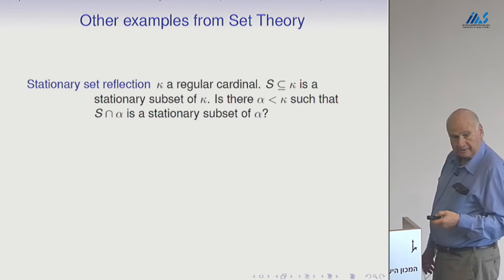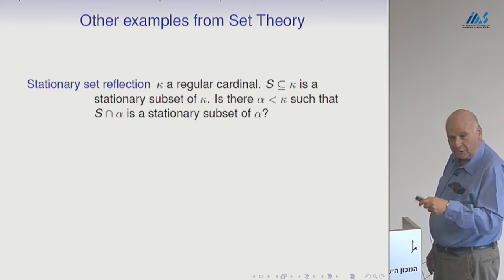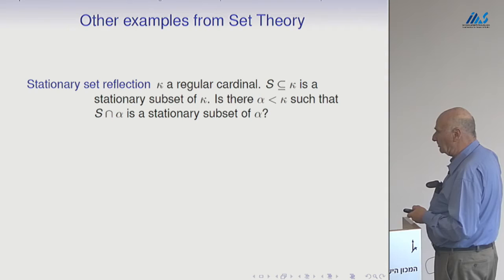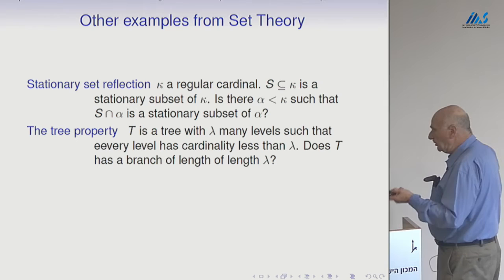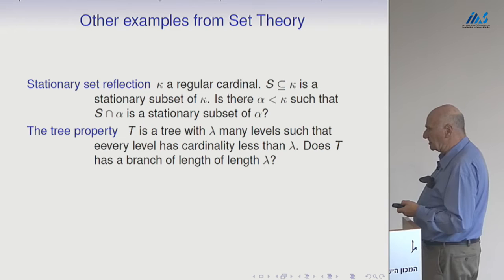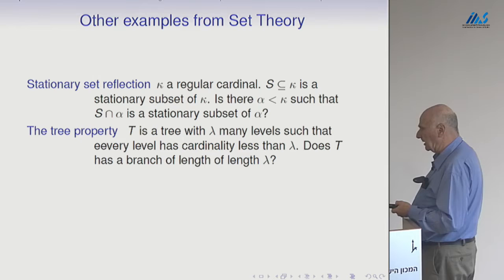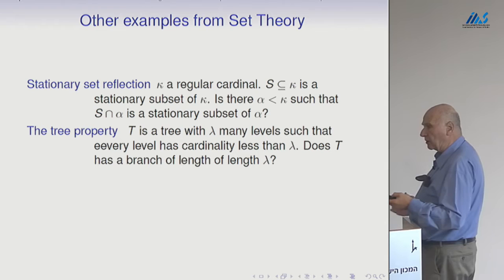Other examples from set theory. Stationary set reflection is a reflection principle — you can also state it as compactness for being non-stationary. You've got a regular cardinal κ and a stationary subset S of κ — is there a smaller ordinal α such that S ∩ α is stationary as a subset of α? You have to assume something about κ or about the stationary set, but it's a very interesting problem from the set-theoretical point of view.